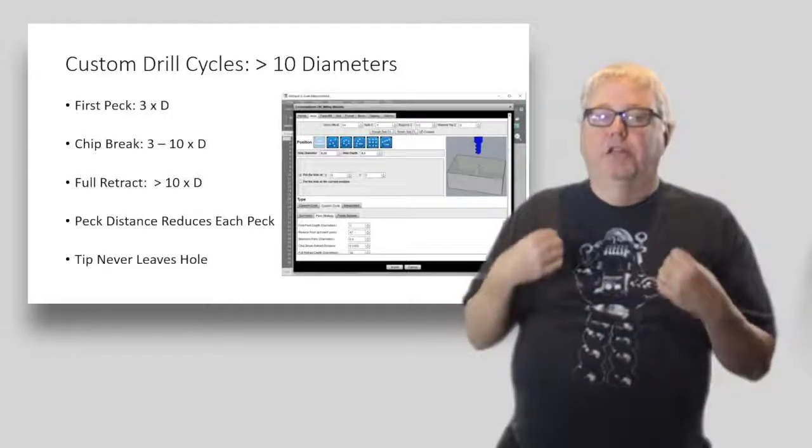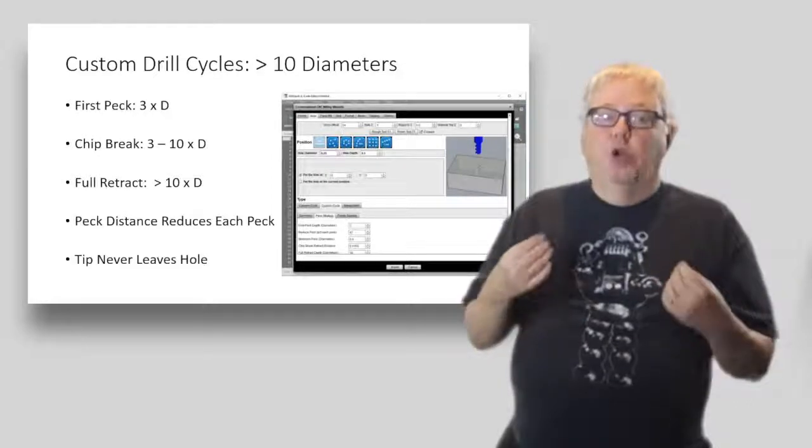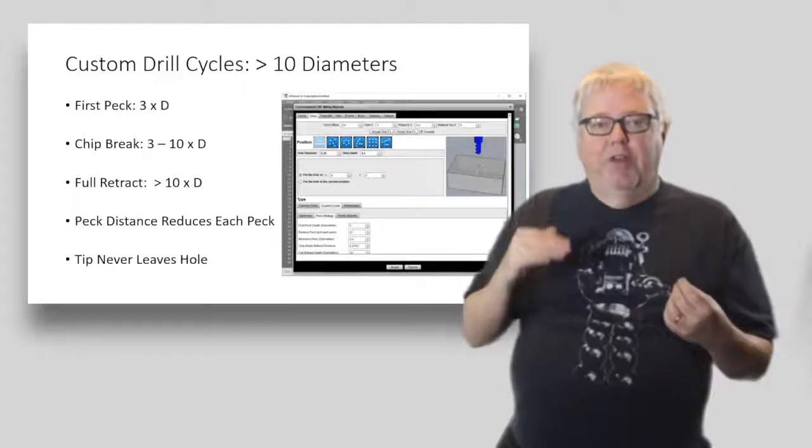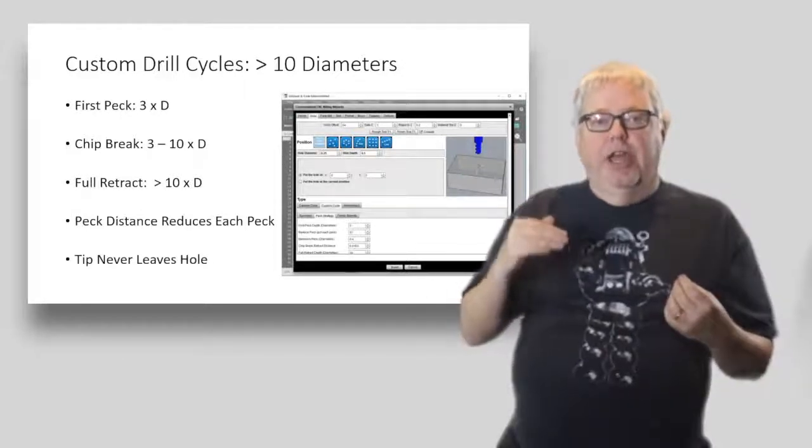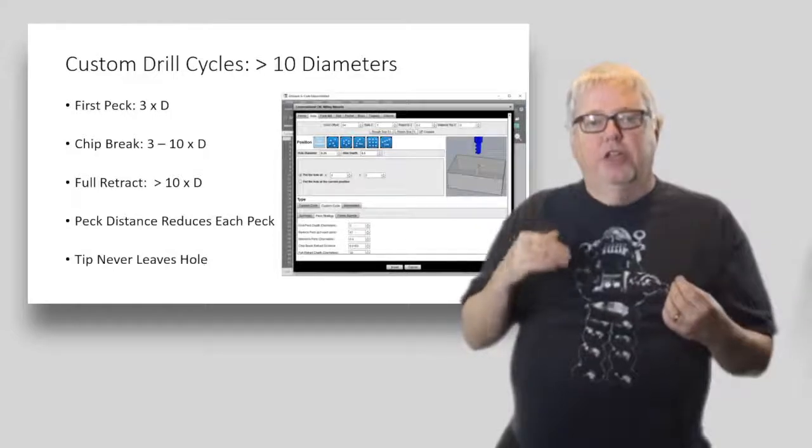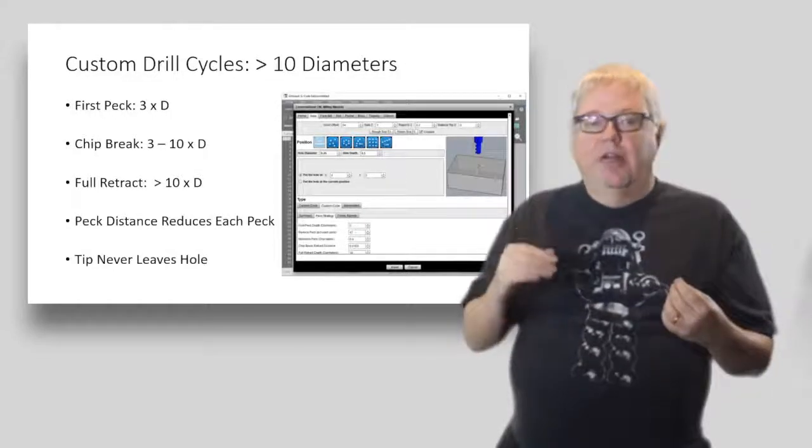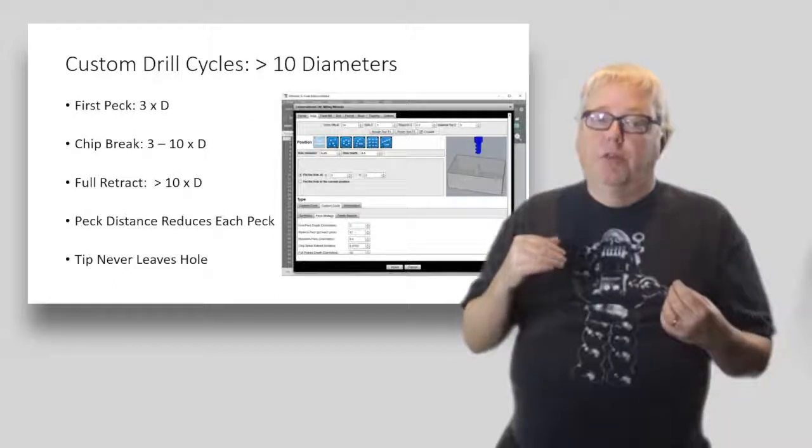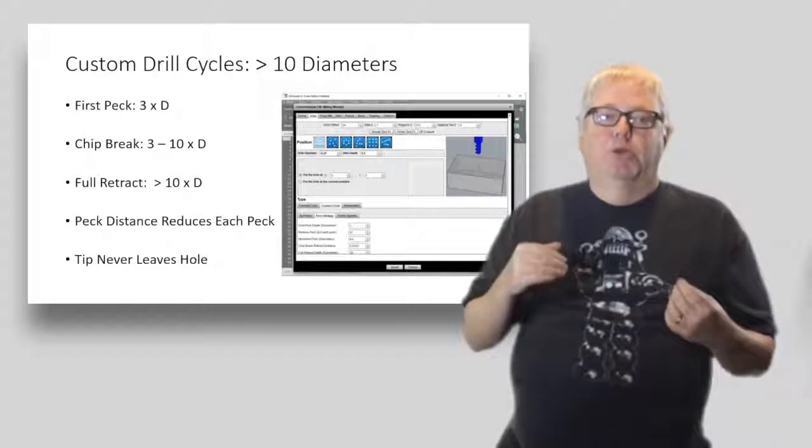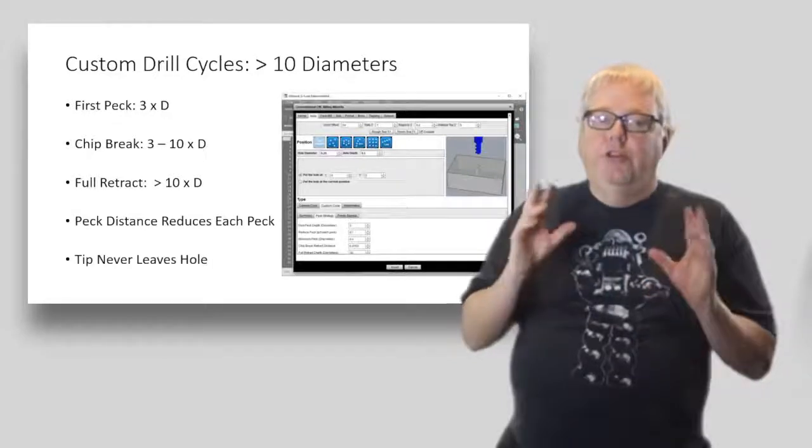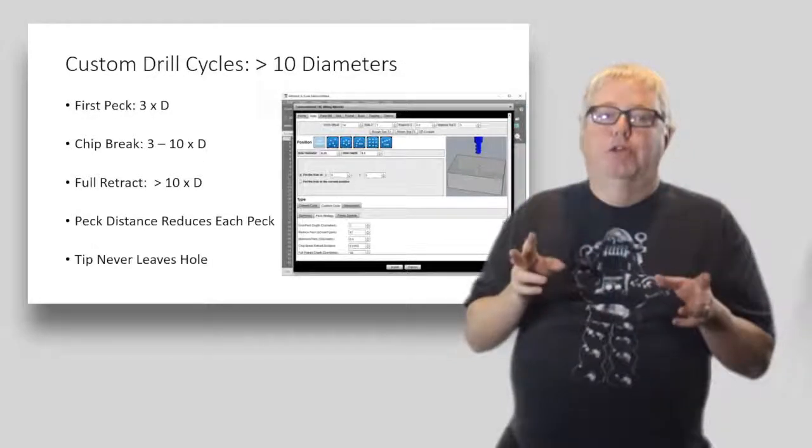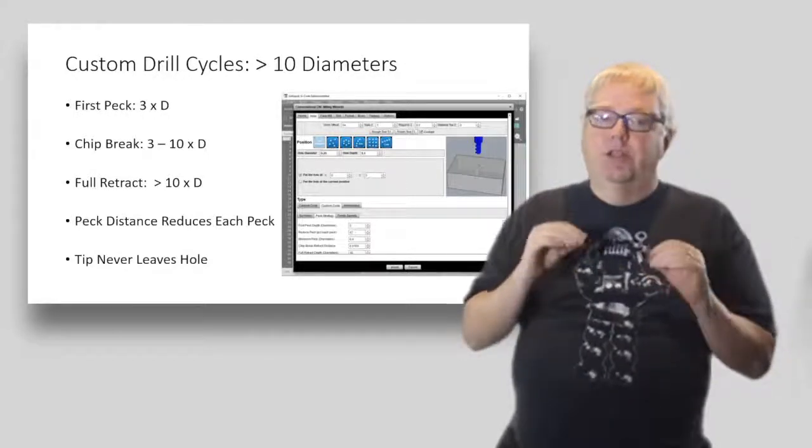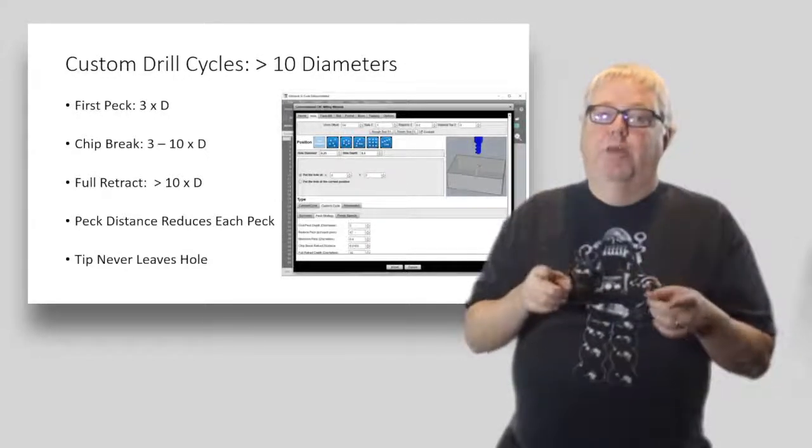What a custom drill cycle does for you is it dynamically varies the motion based on hole depth. It starts out with short pecks that happen very infrequently, and as you get deeper they become more and more often. Then it'll start to retract—not very far and not very often—but the deeper you go with the drill, the more you'll get the retraction motion. By varying all of this, you're avoiding wasted motion.